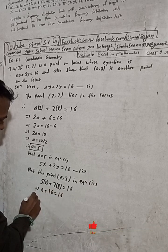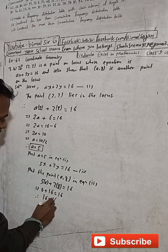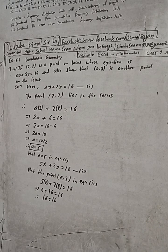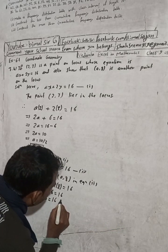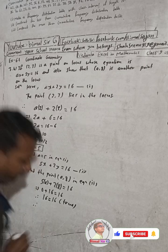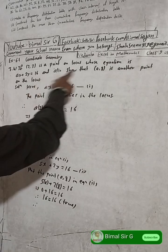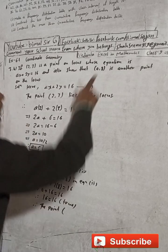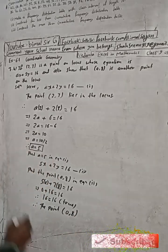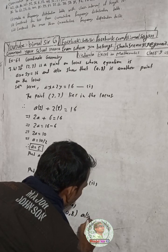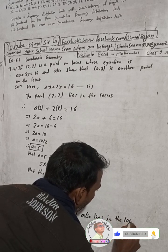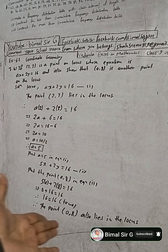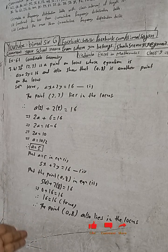We get 5 × 0 + 2 × 8 = 0 + 16 = 16, and 16 = 16. This is true. Therefore the point (0, 8) also lies on the locus.